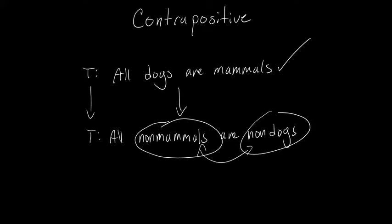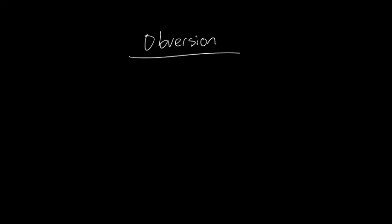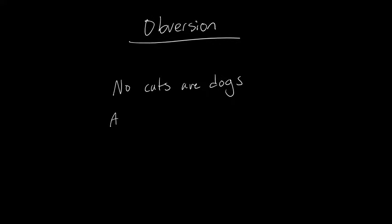It's not merely that this is a valid inference — these are what we call logically equivalent. In terms of logic, they mean the same thing. The semantics seem different since this is about non-mammals and non-dogs, but they are logically equivalent. Later when we map these out, we'll see they map exactly the same way. For obversion, since it's always valid and always logically equivalent, take 'no cats are dogs' — its obverse is 'all cats are non-dogs', and these say exactly the same thing.